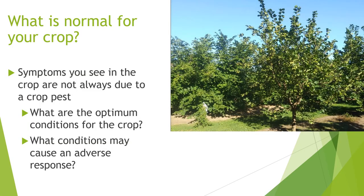When scouting an orchard, it's also important to be aware of what is normal for your crop — something you'll get experienced with over time. Remember that symptoms you see are not always due to a crop pest. You need to know the optimum conditions for growing the crop and whether those have been met. If it's extremely dry or if there's been a frost, that can cause an impact on the tree that is not caused by a pest but may look like one.